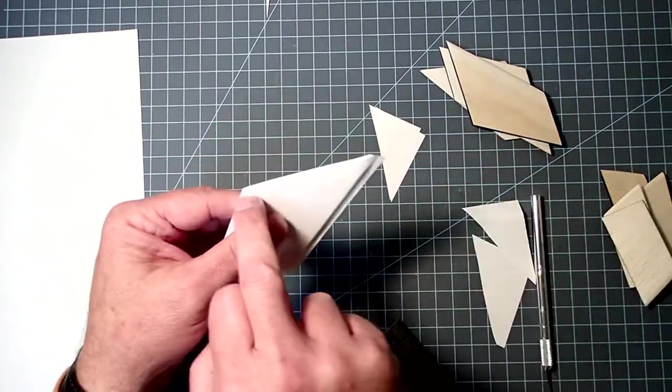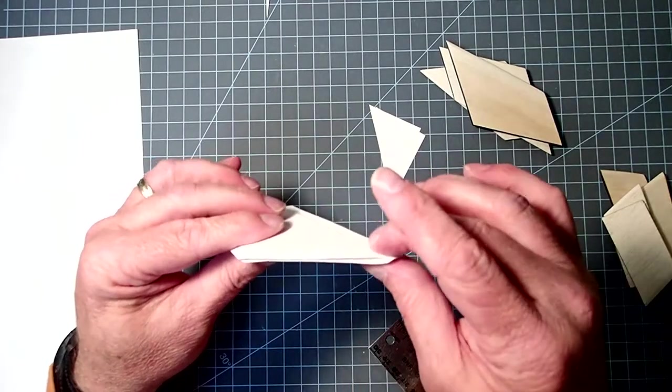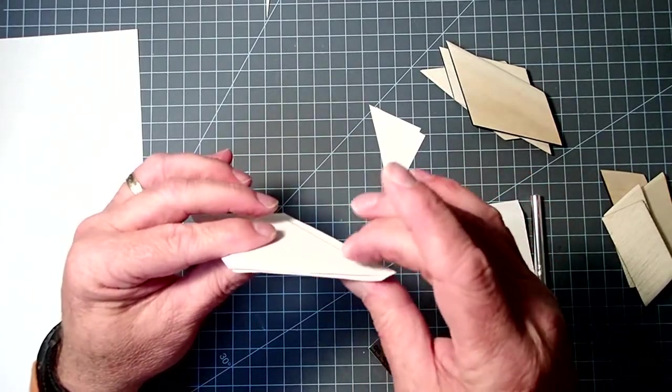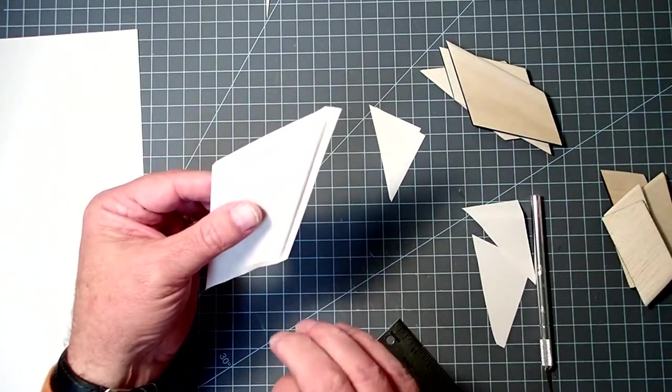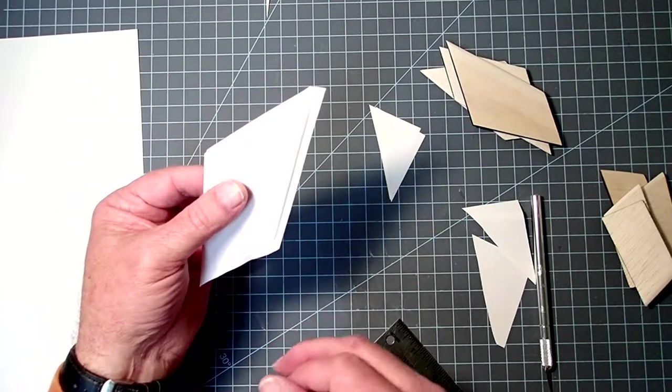And then when we come back, we'll trim off the excess paper here, and then add a little bit of super glue to help seal everything together. So I'm going to go ahead and do this with the other fins, and when we come back, we'll see what happens with the paper.